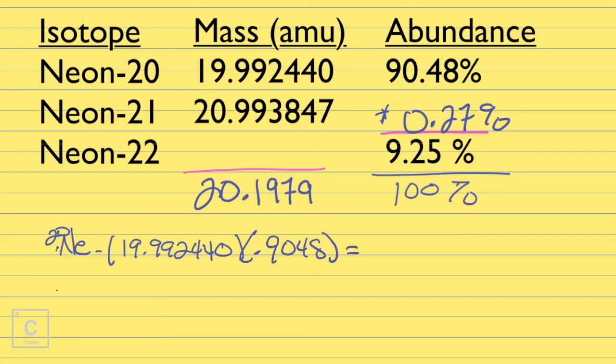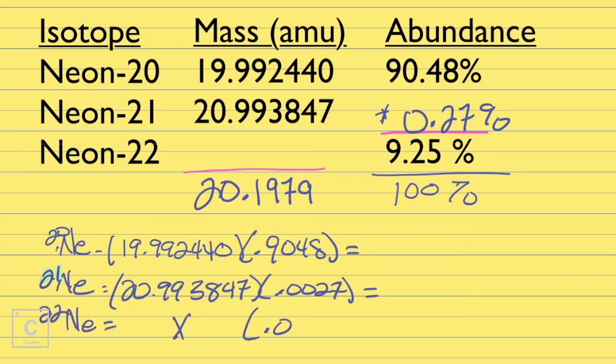I'm not going to put it in the calculator yet. I'm going to go ahead and do neon-21. And we've got 20.993847 times that by 0.0027. We've got to move that decimal. When there are tiny little percents like that, you've got to be really careful. 1 and 2, that's two zeros. Okay, let's keep going. We've got neon-22. We don't know this, but we do know this. Okay, I'm going to start putting this in the calculator. 19.992440 times 0.9048. Okay, and that's giving me 18.089. Then I've got 20.993847 times 0.0027. And I'm only getting 0.0567.